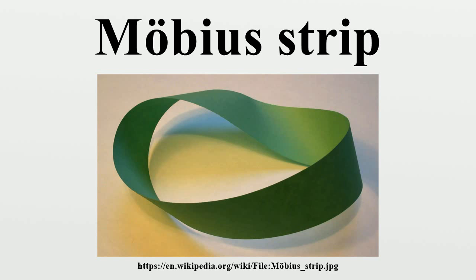The Möbius Strip is also a standard example used to illustrate the mathematical concept of a fiber bundle. Specifically, it is a non-trivial bundle over the circle S¹ with a fiber the unit interval I = [0,1]. Looking only at the edge of the Möbius Strip gives a non-trivial two-point bundle over S¹.